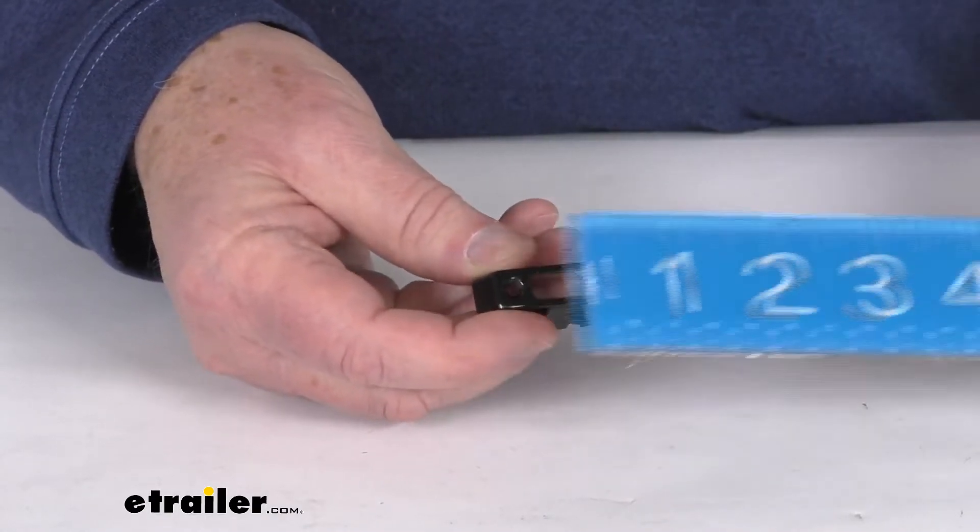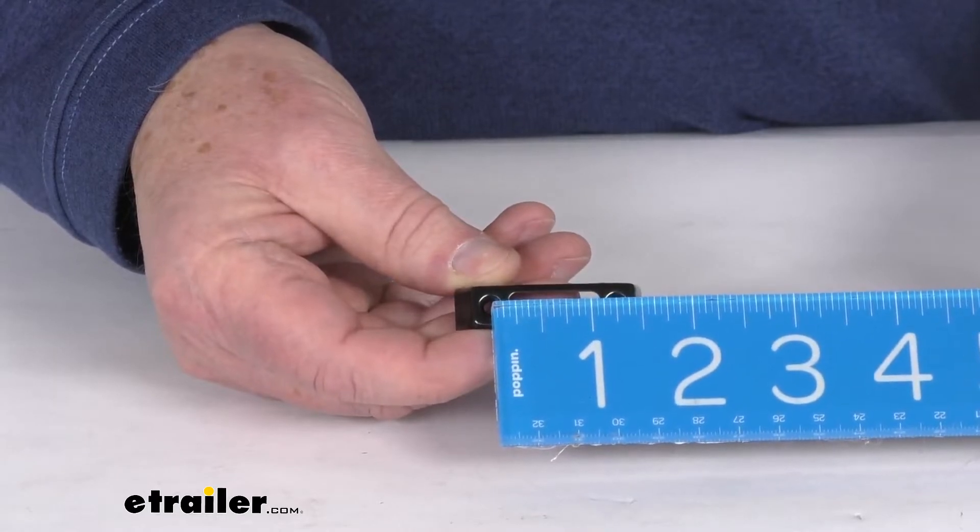Now the distance between the mounting holes, center to center, is going to be right at one and a quarter inches.